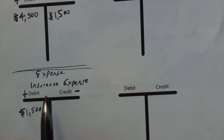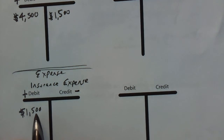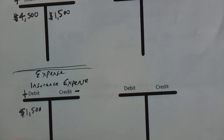So our insurance expense has gone up. And at the end of our period or the end of the year, we're going to add up all our expenses, all our debits, and see exactly how much we've spent.